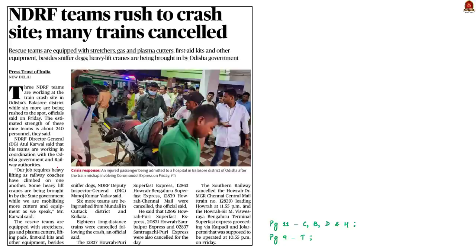This news article covers the train accident that happened in Odisha. The incident took place when the Coromandel Shalimar Express passenger train derailed and hit a goods train, and another train — the Eshwantpur Haura Superfast — crashed into the derailed coaches. The number of dead is likely to rise and many are believed to be trapped in the wreckage. Nearly 240 personnel in 9 teams are working at the crash site in Odisha's Balasore district. Let us pray for the souls of those who lost their lives.